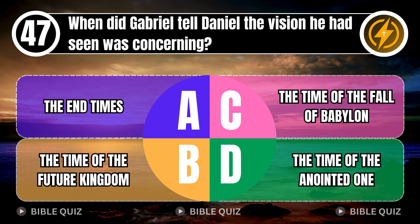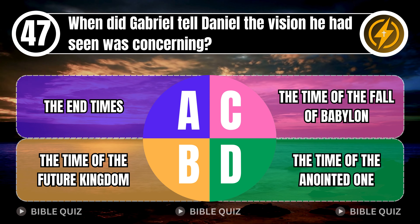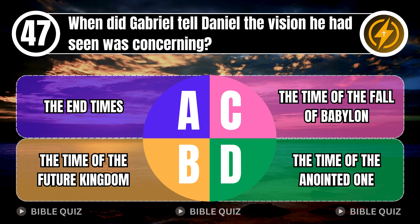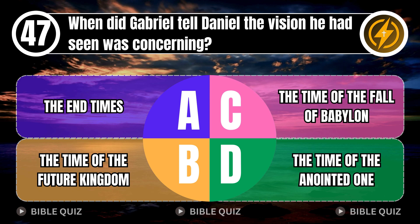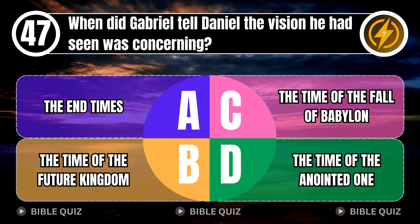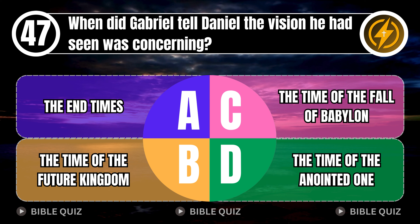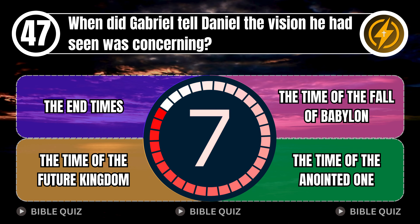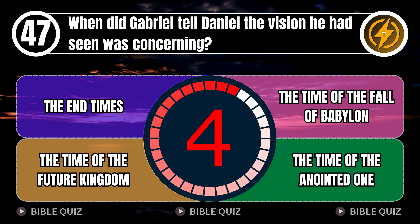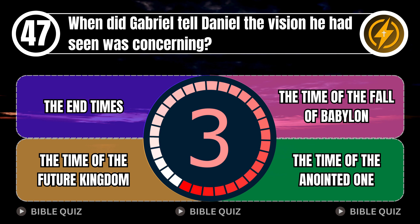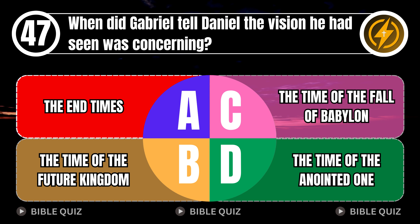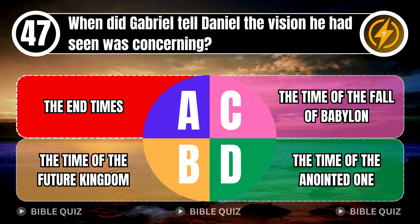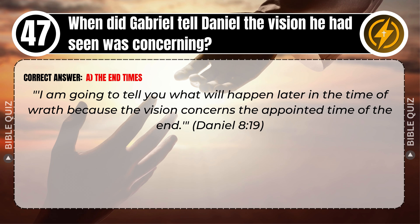Question 47: When did Gabriel tell Daniel the vision he had seen was concerning? A. The end times. B. The time of the future kingdom. C. The time of the fall of Babylon. D. The time of the anointed one. Correct answer: A. The end times. 'I am going to tell you what will happen later in the time of wrath, because the vision concerns the appointed time of the end.' Daniel 8 verse 19.